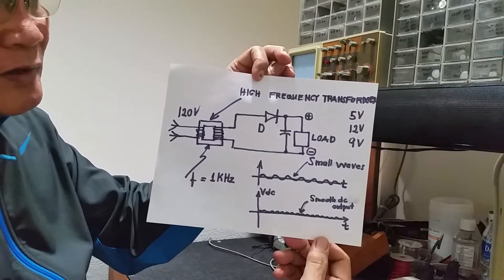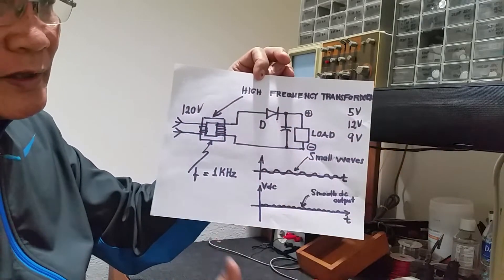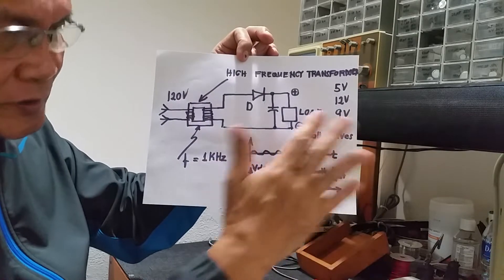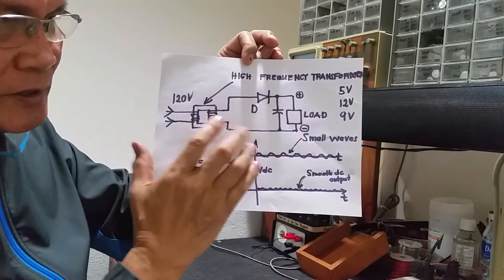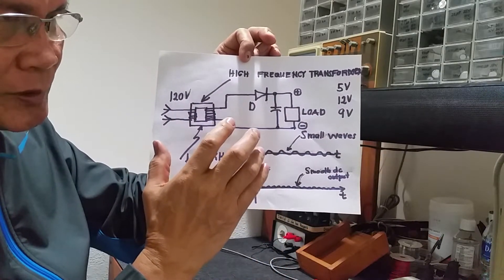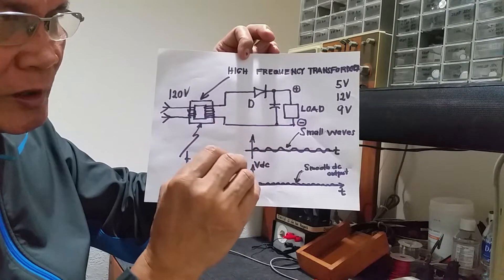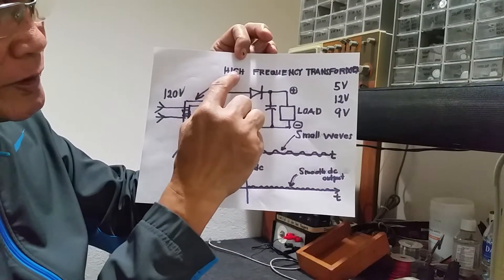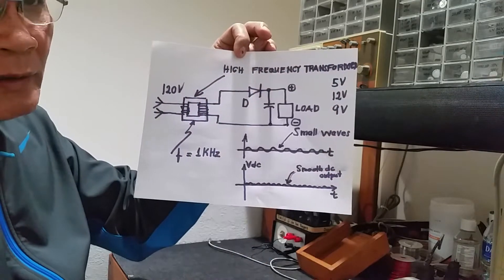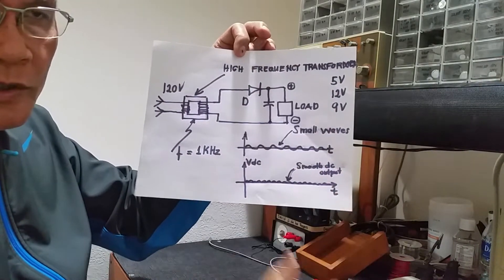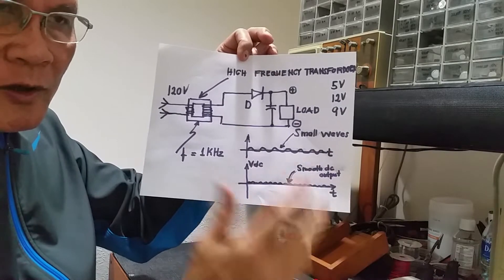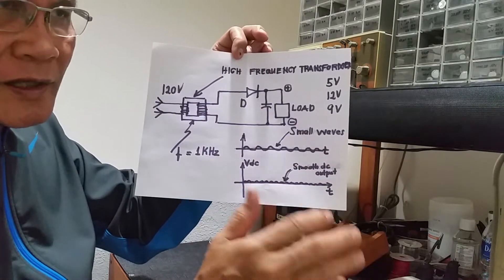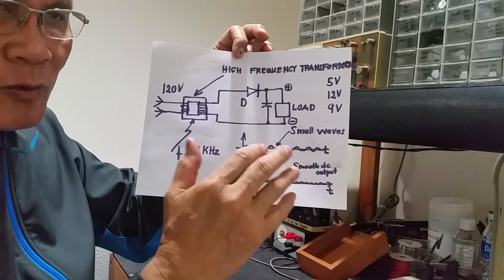This is the simplified circuit diagram — the other components are not yet shown here. But the basic thing for the output current to be almost a perfect direct current is by the use of a high-frequency transformer.